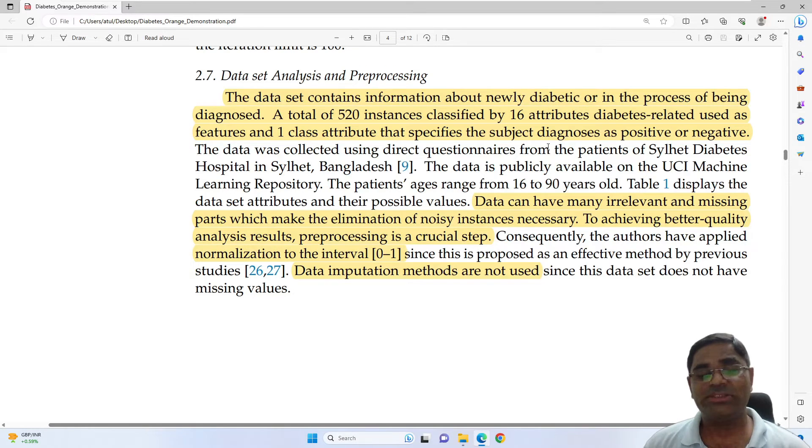So after downloading the data and visualizing it, the next step is to clean the data and to preprocess it. In this particular article, they only preprocessed it by using normalization to interval. This means the parameters of every category would lie between 0 to 1.